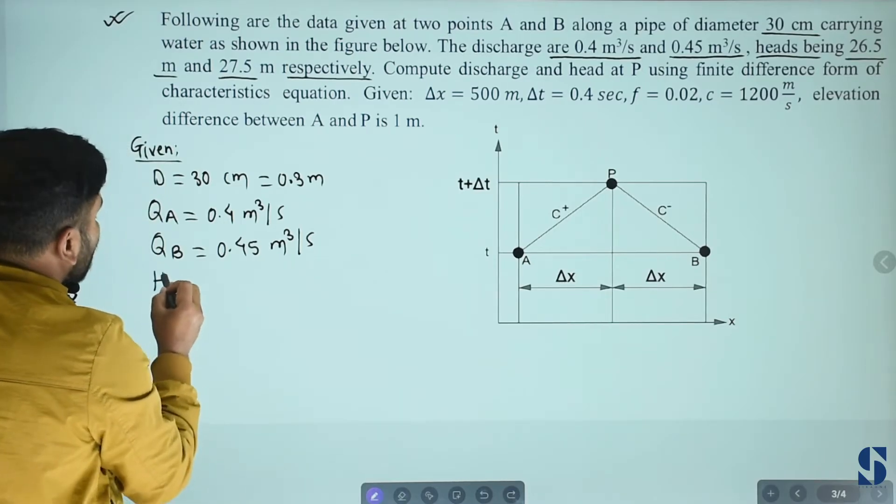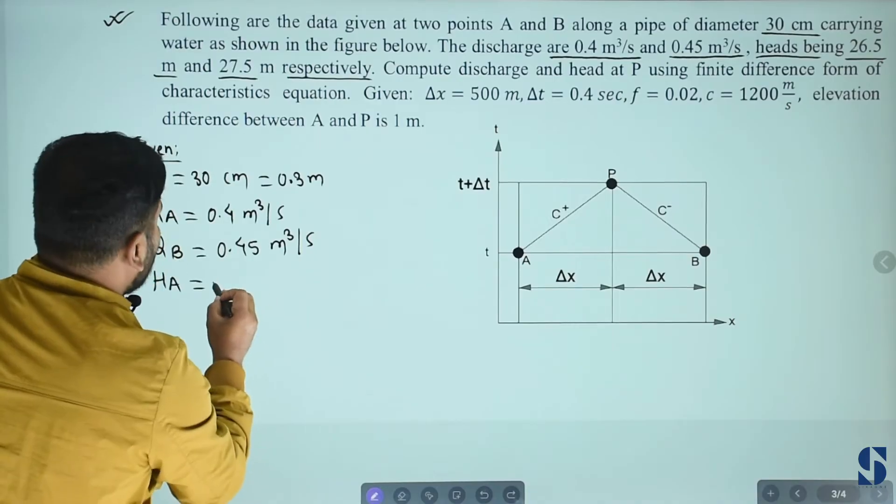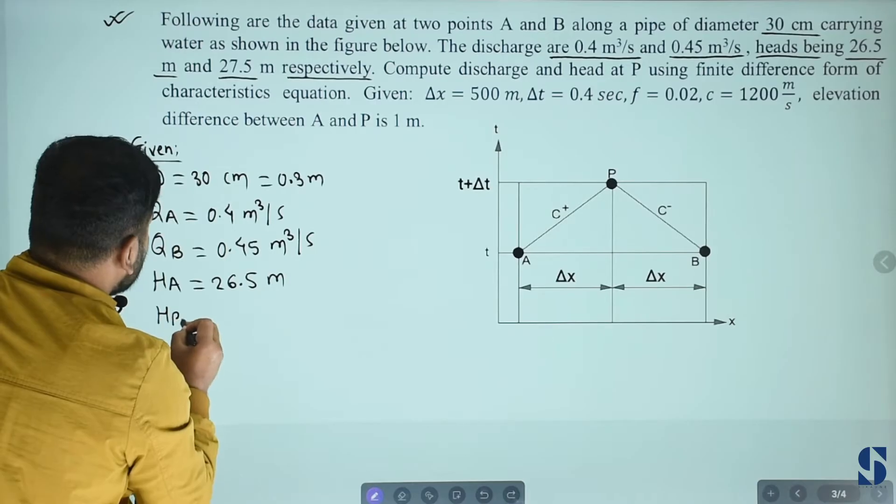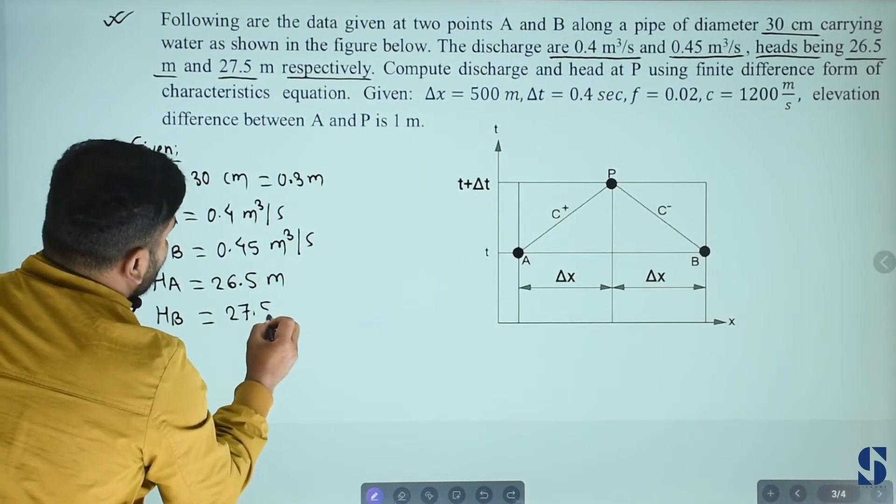Then heads being at A, HA equals to value 26.5 meter. Then heads being at B, HB equals to value 27.5 meter.